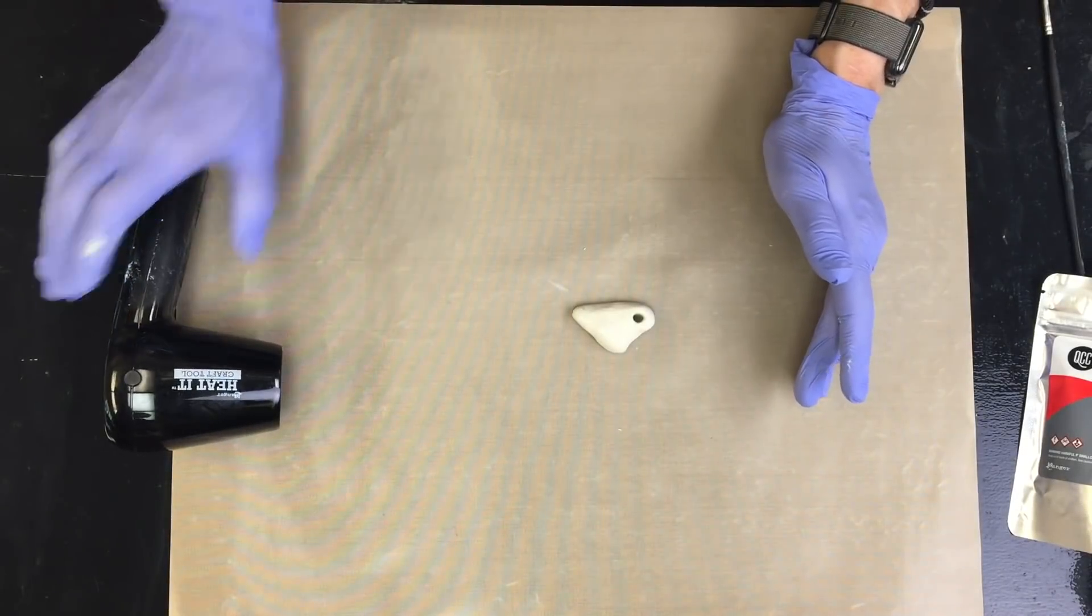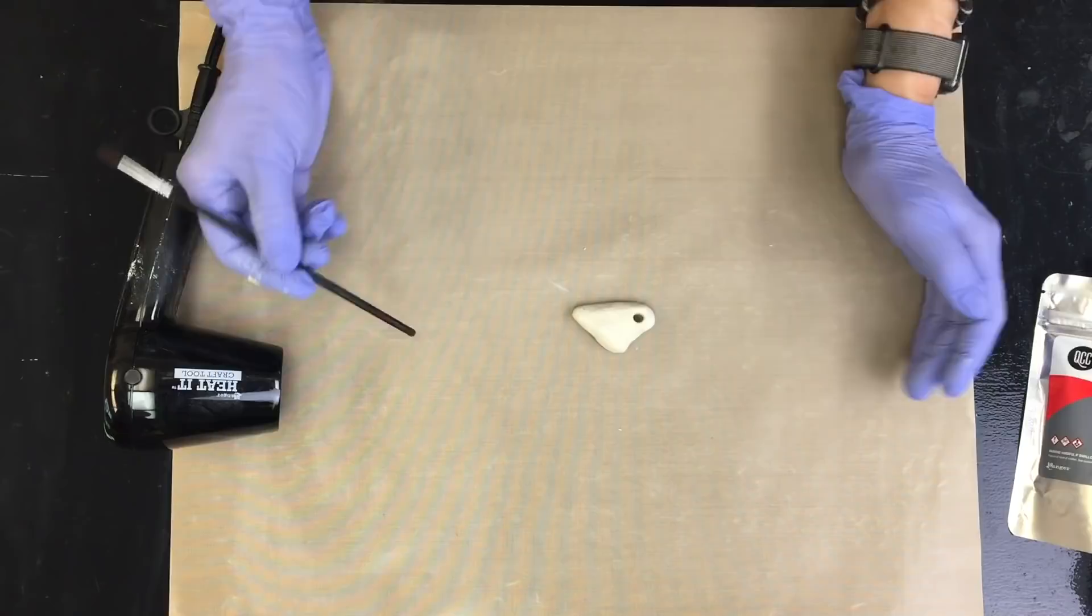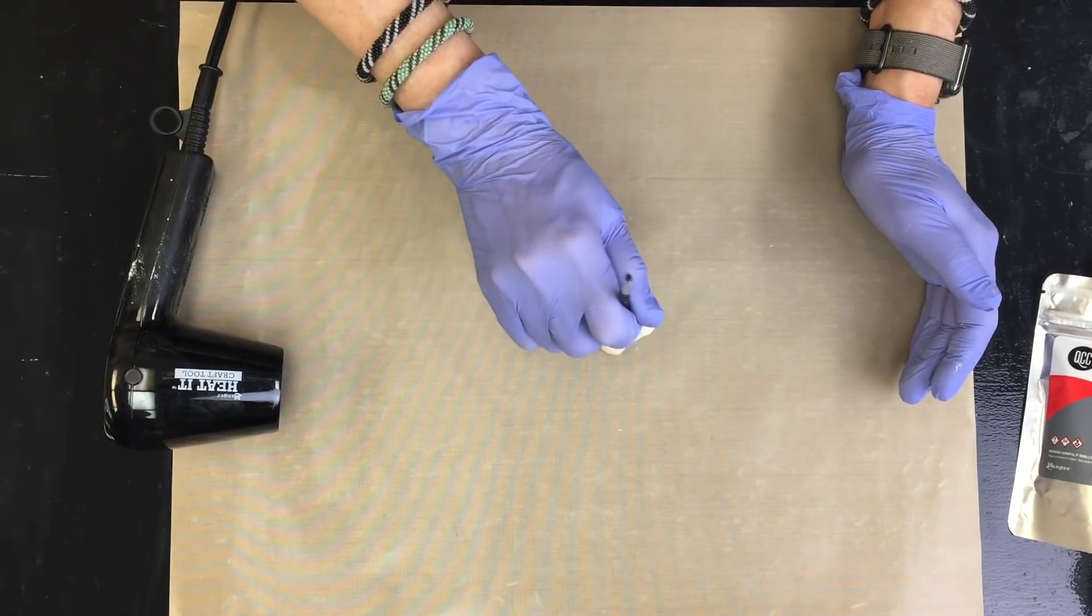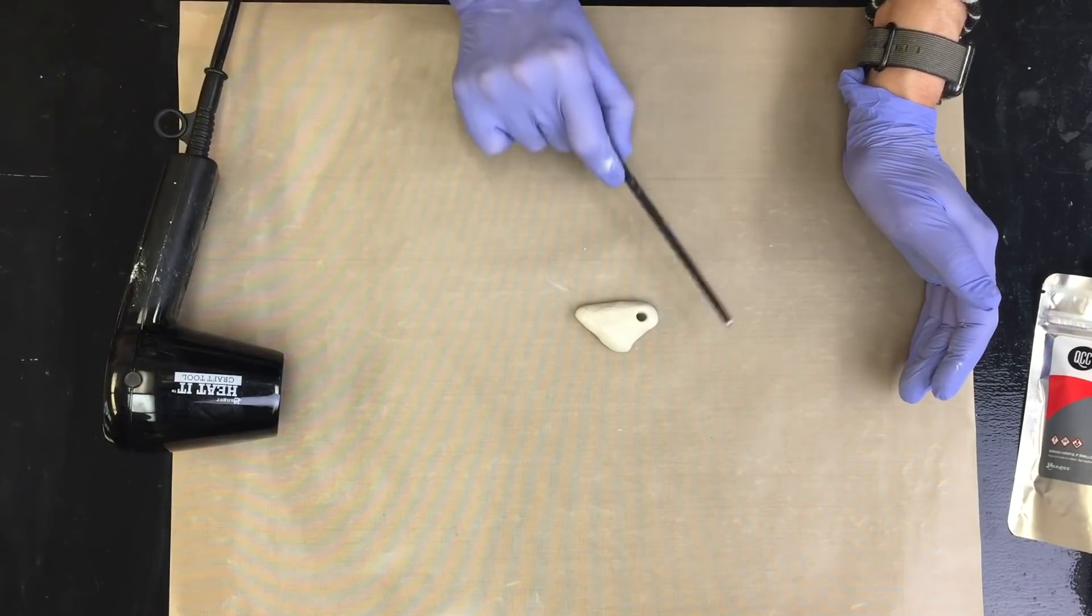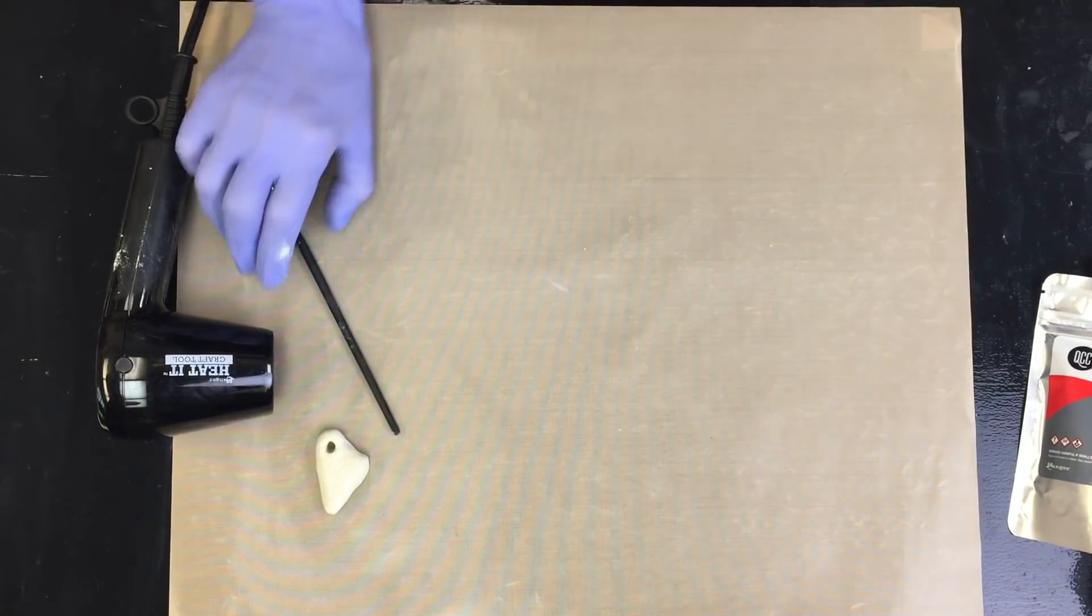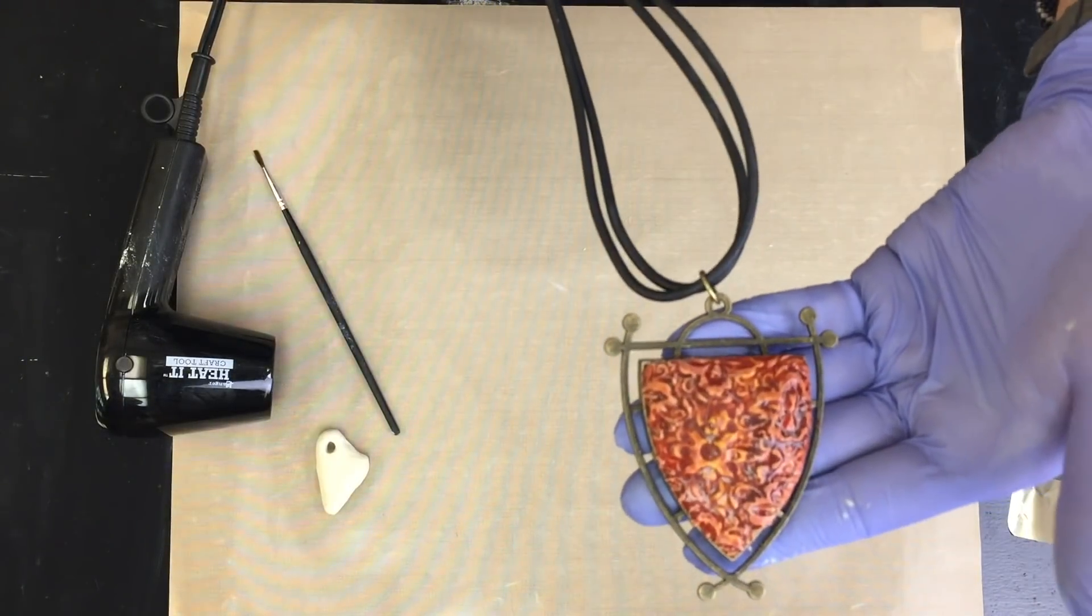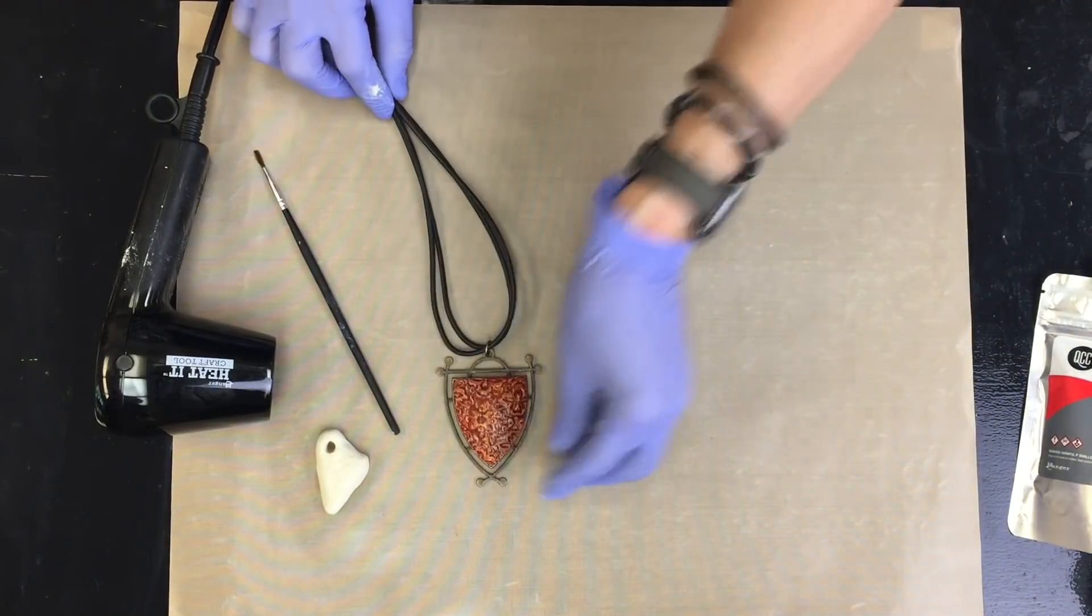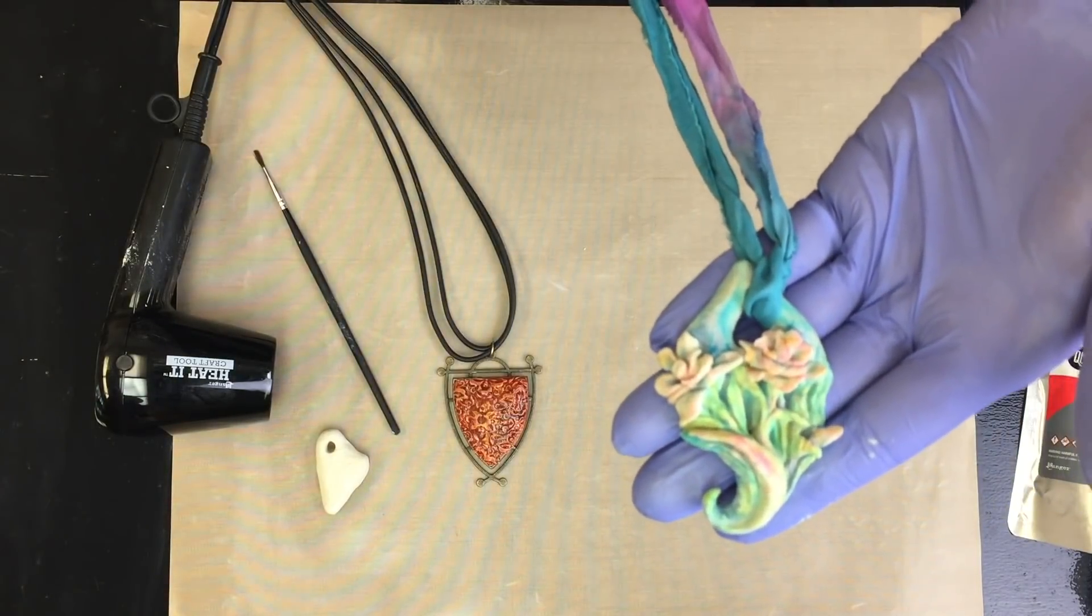When you're done curing the piece it's going to be hot so don't touch it, leave it for a little while. But you'll see it cures to a rock hard finish and I'm going to show you a couple of pieces that have been finished. These are jewelry pieces but you can make sculptures as well.